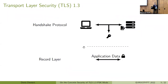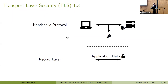Structurally, TLS is composed of two protocols. First, there's the handshake protocol, which is basically the authenticated key exchange of TLS, negotiating a session key that is then used in the record layer to actually protect the application data using an authenticated encryption scheme such as AES-GCM. In this talk, I will solely focus on the handshake protocol.